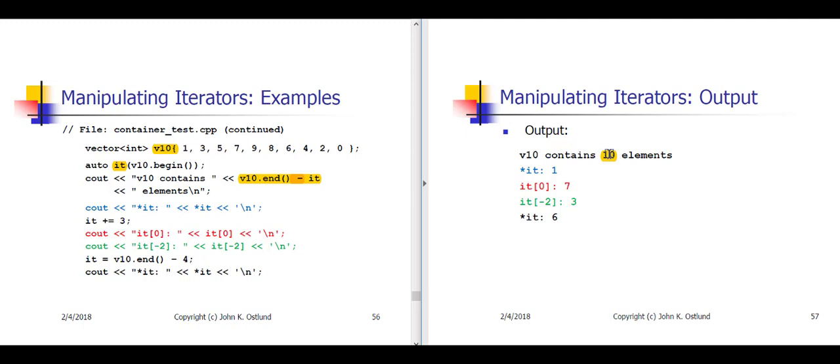Recall that end is just beyond the final value of the vector. So if we were thinking of this in terms of integer subscripts, this would be the equivalent of subtracting a subscript of 0 from a subscript of 10, which is one too far. I can access the element that it is pointing to. At this moment, that's the initial element in the vector, which of course is 1.